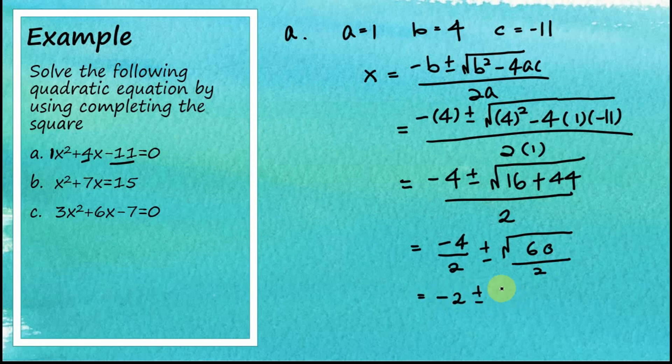Plus minus, if you want, you can write this as half, half square root of 60. And this is the answer. So this is the solution for the first quadratic equation.